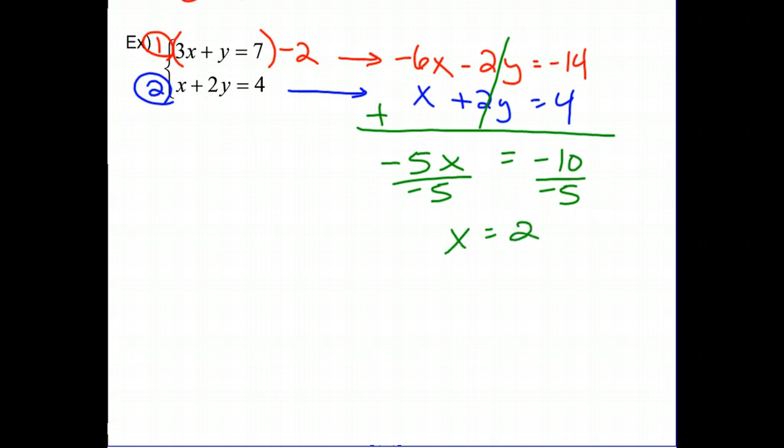And again, don't forget, once we find our X, we need to find our Y. So I'm going to take that X I just found and I'm going to plug it into the first equation and solve for Y. So 3 times 2 plus Y equals 7. 6 plus Y equals 7. Subtract 6 and Y is 1. Therefore, the solution to this system is 2 comma 1.